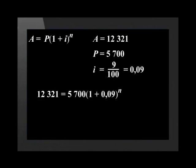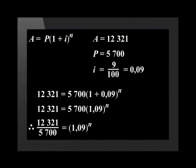Substituting these values into the formula will give us 12,321 is equal to 5,700 multiplied by open bracket 1 plus 0.09 close bracket to the power of n. Adding 1 plus 0.09 will give us 1.09 in the bracket. To solve for n, we have to divide both sides of the equation by 5,700.